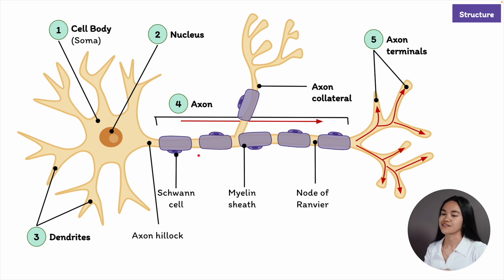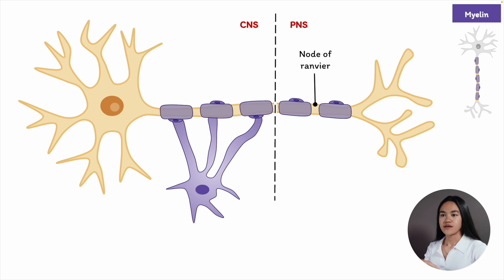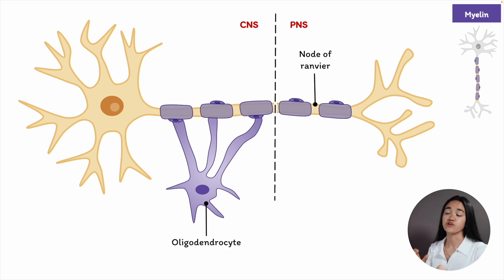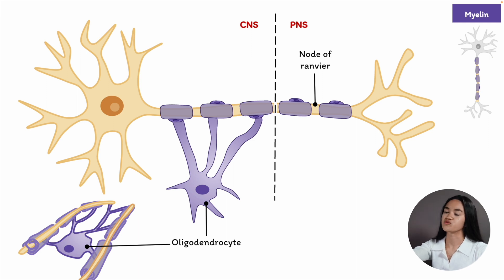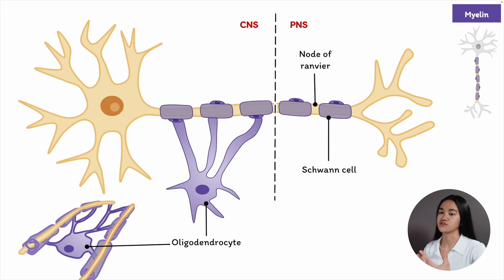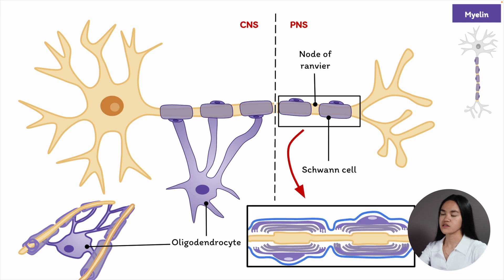Let's take a closer look. In the central nervous system — the brain and spinal cord — oligodendrocytes are responsible for generating myelin sheaths. In the peripheral nervous system, Schwann cells form myelin sheaths. Zooming in, here's the nucleus of a Schwann cell and the basal lamina.